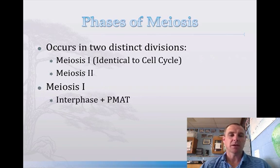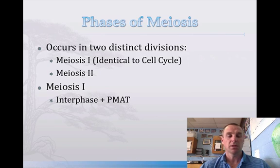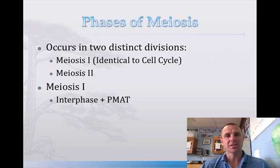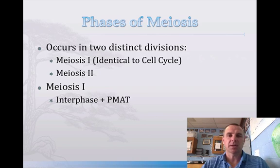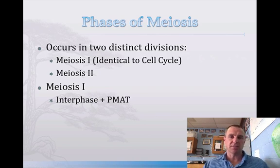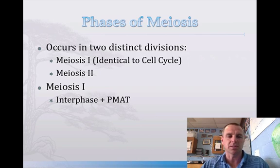In meiosis 1: interphase is where the chromosomes double. Prophase — three things occur: the nucleus disappears, chromosomes coil up for a trip, and spindles start to form. Metaphase — they line up down the middle of the cell. Anaphase — they move to opposite ends of the cell. And telophase — they split into two cells through the process of cytokinesis.